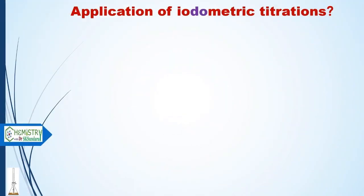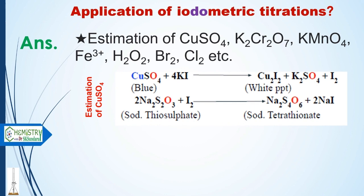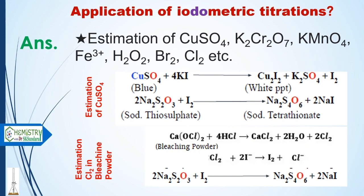Applications of iodometric titrations include estimation of copper sulfate, potassium dichromate, potassium permanganate, iron, hydrogen peroxide, bromine, and chlorine in bleaching powder. The estimation of copper sulfate and chlorine in bleaching powder are included in undergraduate chemistry courses. In this two-step process, copper sulfate reacts with potassium iodide to liberate iodine, and then the liberated iodine reacts with sodium thiosulfate to form sodium iodide.